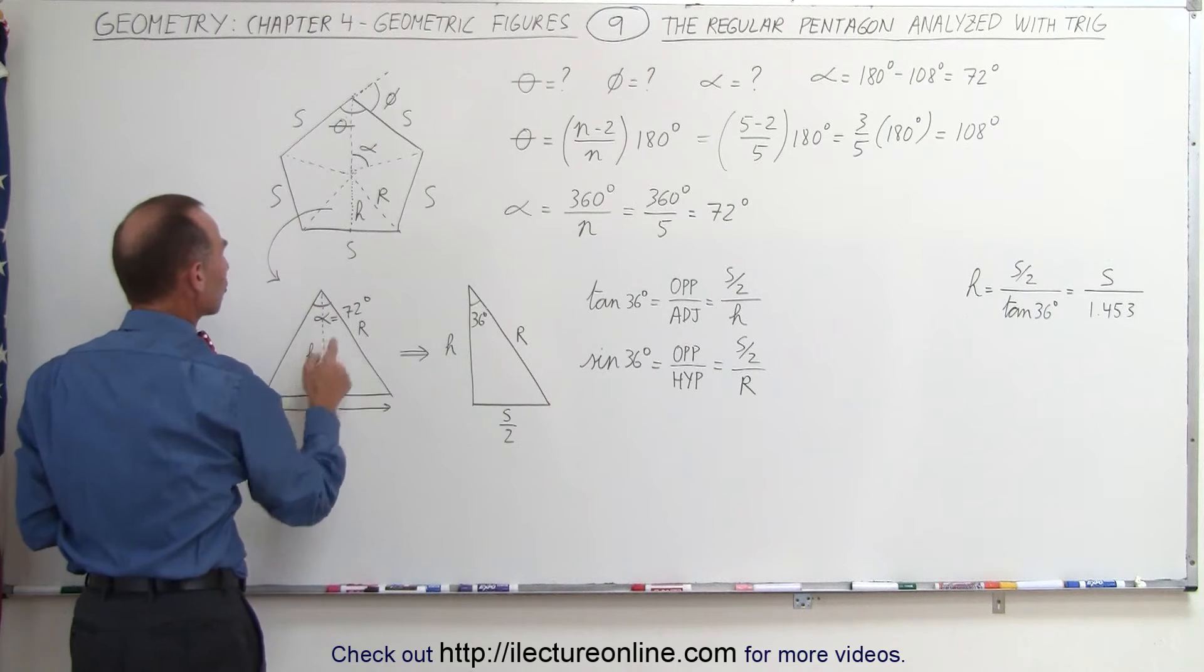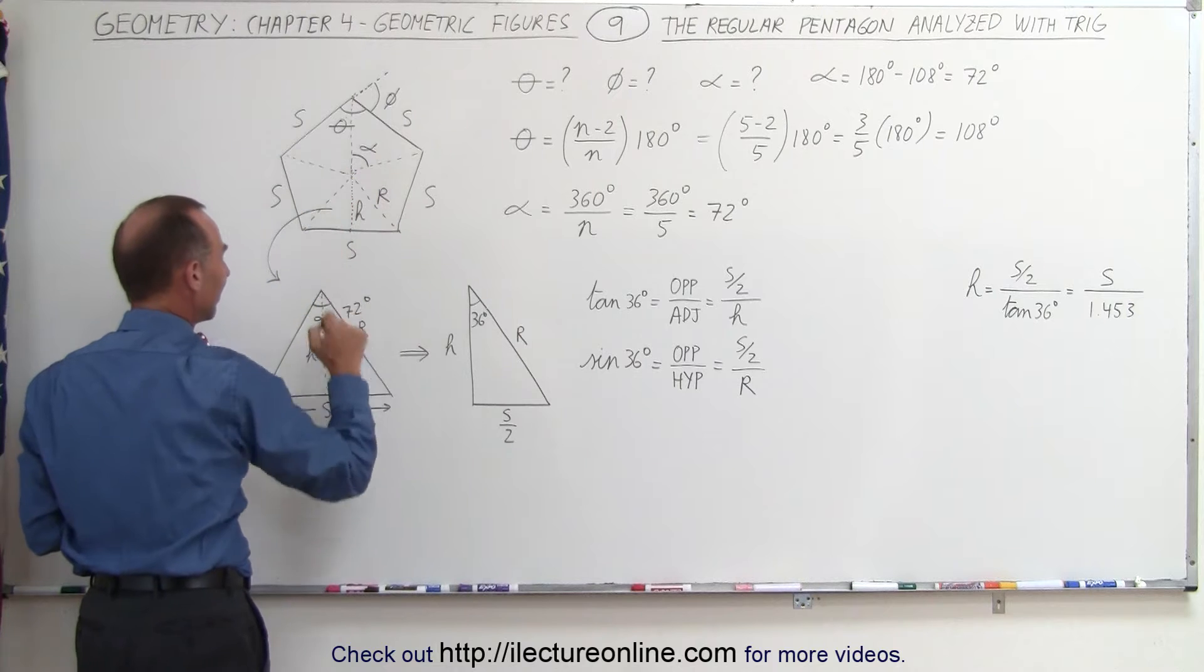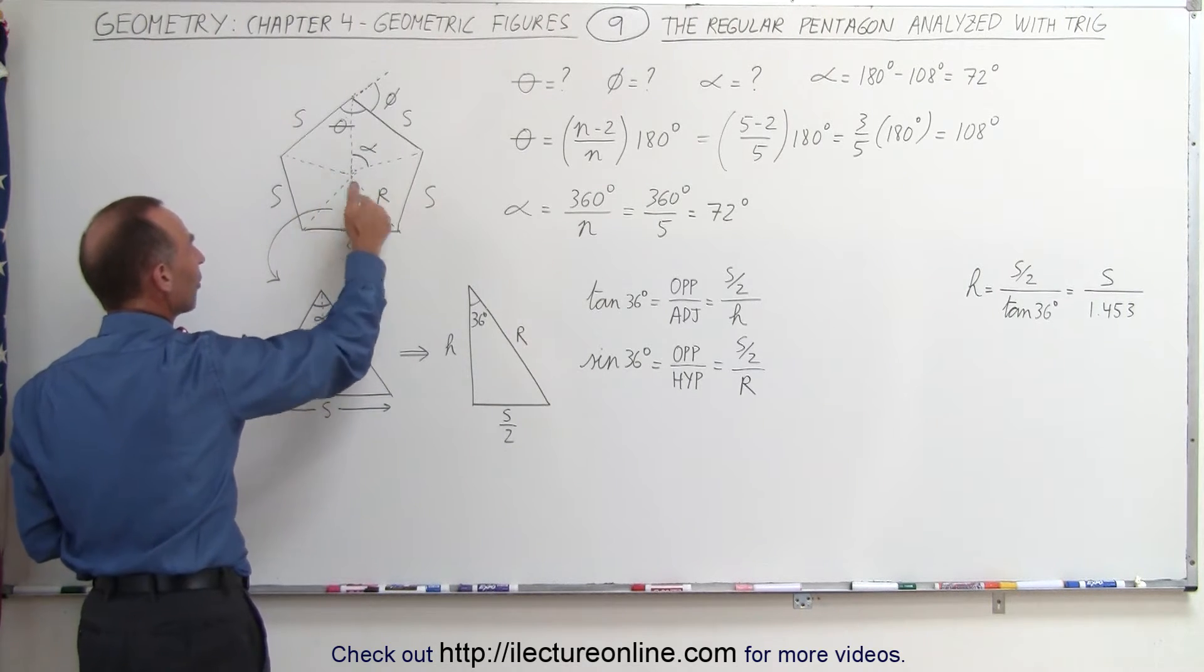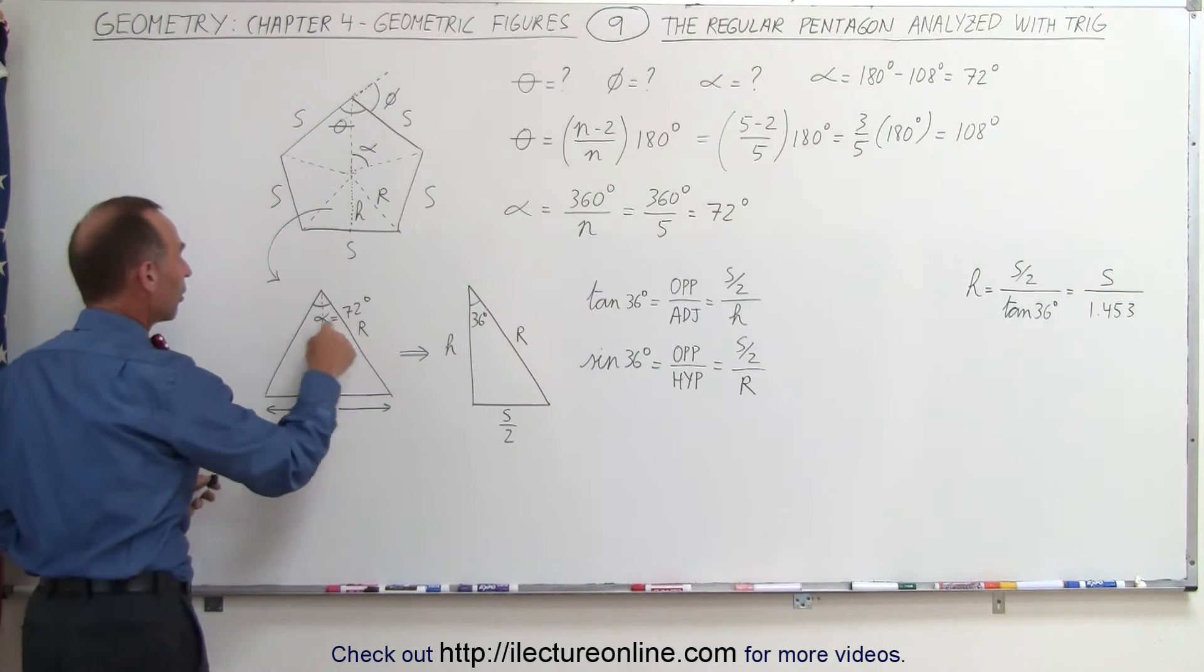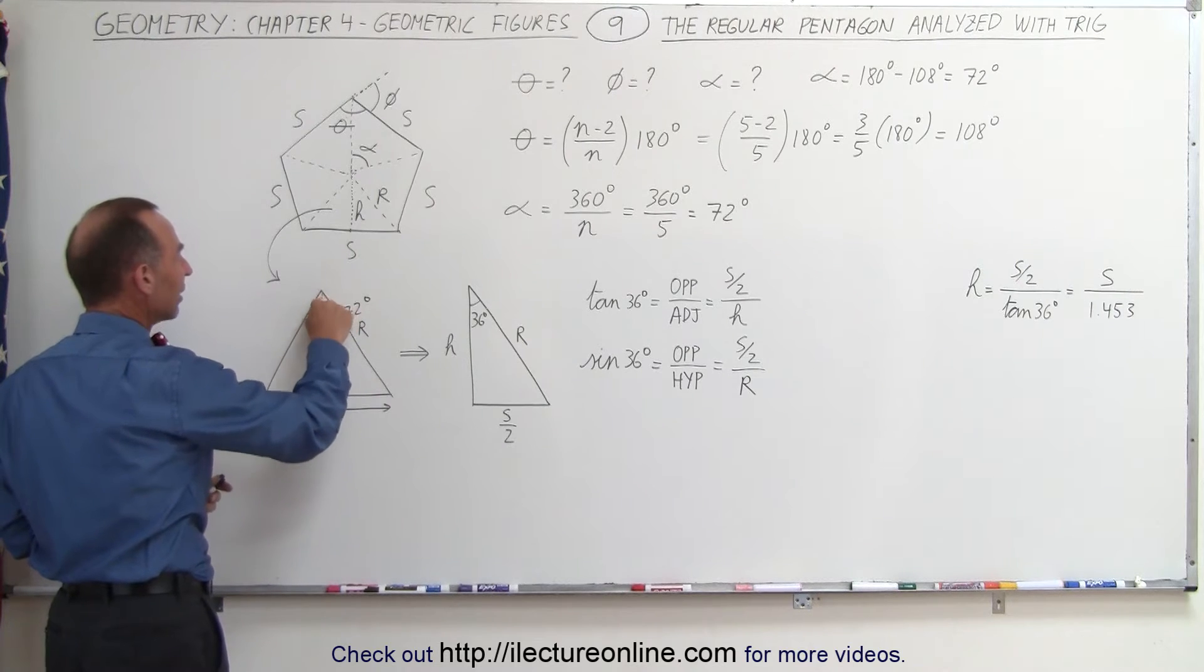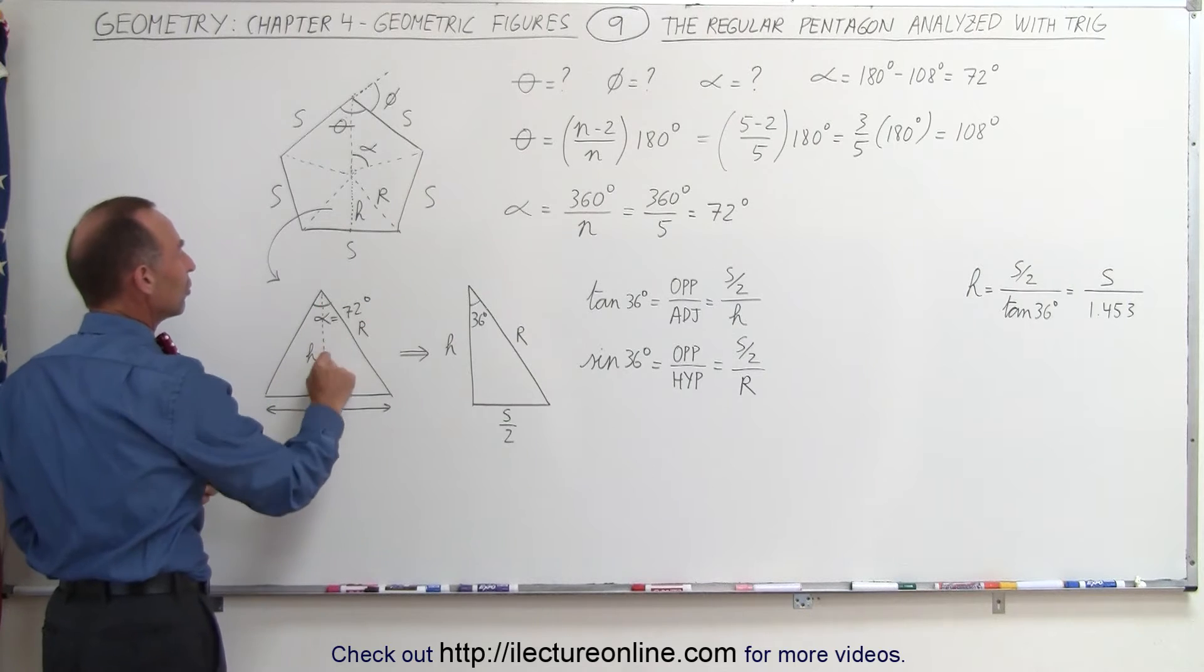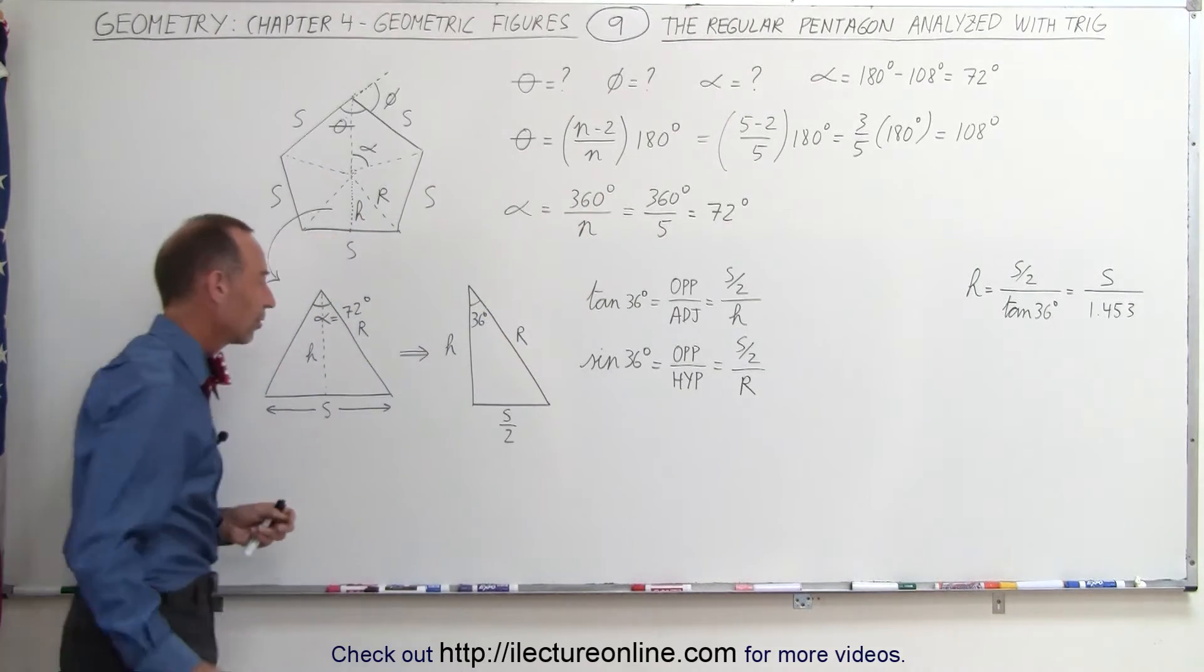We have H, which is the height of the triangle, the distance from the base to where all the triangles meet. And then we have R, which is the two sides of each triangle. It happens to be an isosceles triangle, which means that R and R here are equal to one another. We also realize that the angle at the very tip of each of the five triangles is equal to 72 degrees, because 5 times 72 adds up to 360 degrees.